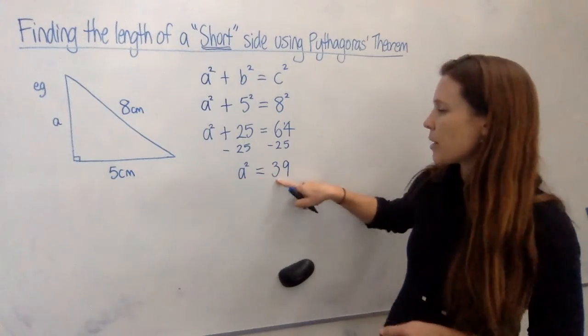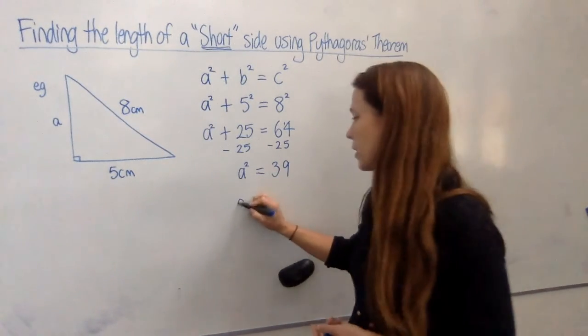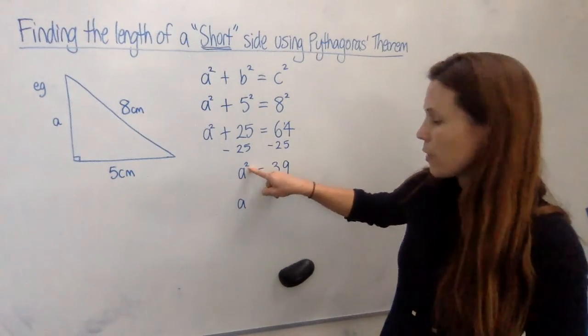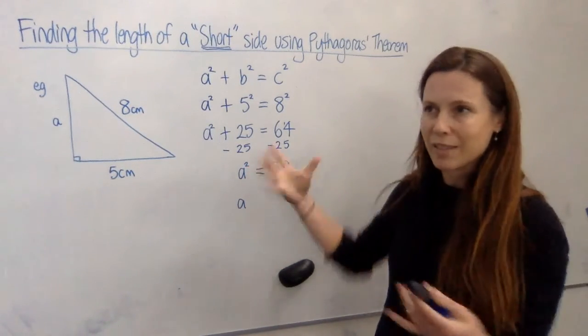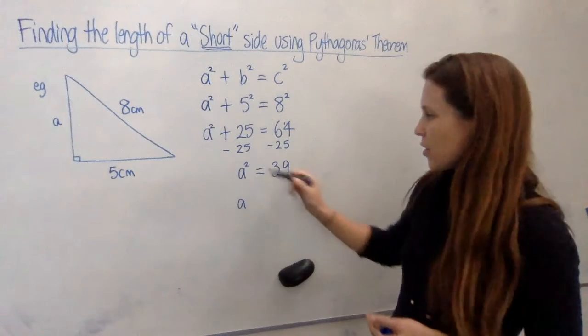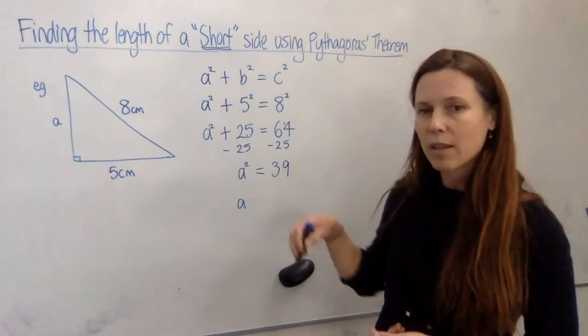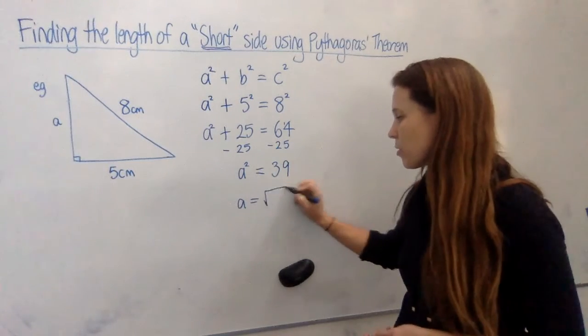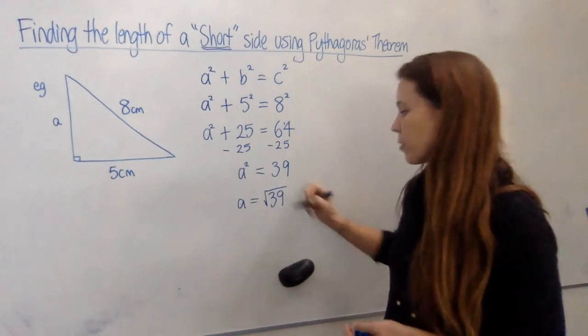Okay, so we know that a² is 39, so what is a? Well, what have I done to get from here to here? The square is gone, so I've sort of unsquared the number. Now the opposite of squaring something, to undo that, we take the square root. So that's what's happened on this side. To make up for it, we have to do the same to the other side and take the square root.